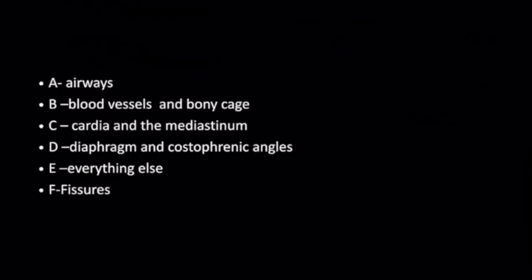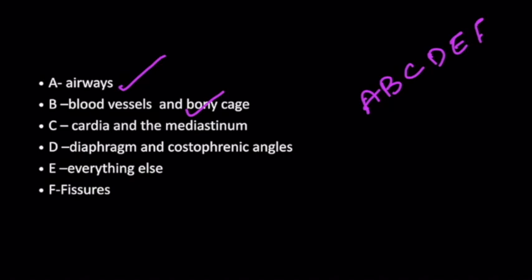If you have a protocol in reading chest radiograph, it becomes simple. It ensures that we have not missed any specific areas. We'll go with the algorithm A, B, C, D, E, and F. A stands for airways; B for blood vessels and the bony cage; C for cardiac and mediastinum; D for diaphragm and costophrenic angles; E for everything else, which we shall see in detail later; and finally F for fissures.